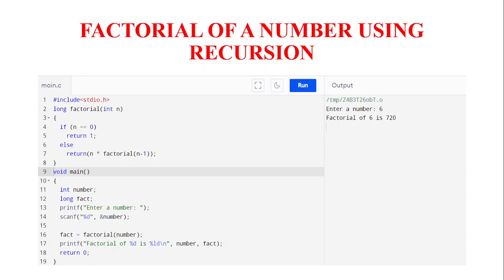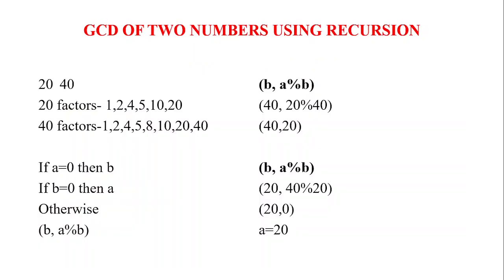Now it will be 5 into fact of 4. Then 4 will be 4 into fact of 3. 3 will be 3 into fact of 2. 2 will be 2 into fact of 1. 1 will be 1 into fact of 0. Now fact of 0 will return 1. So the answer it will be multiplied. With the value and finally we will get 720 as the answer. So the function calls itself here in your recursive procedure.